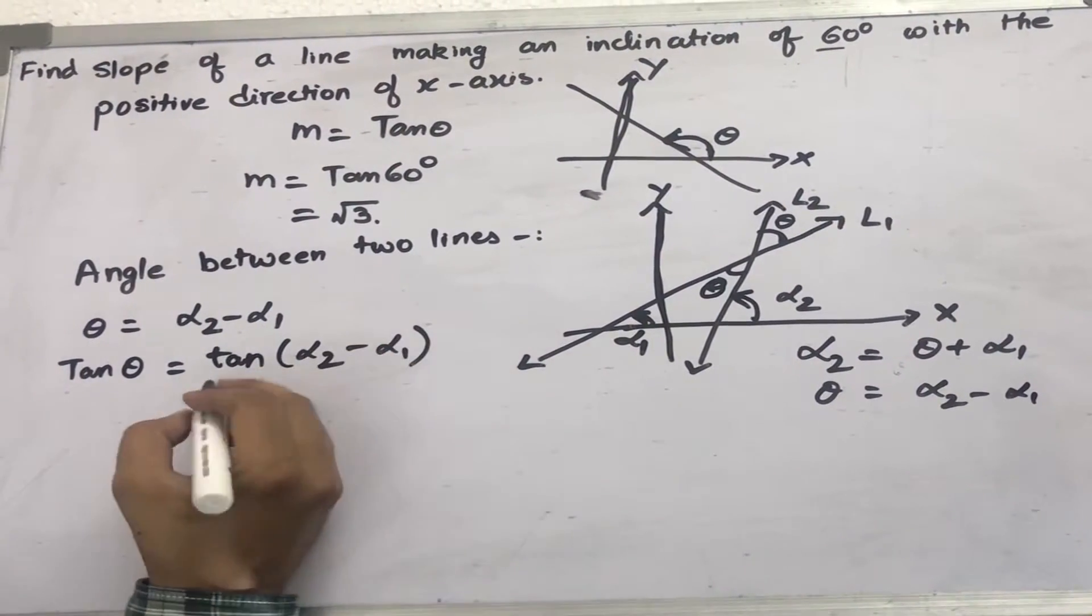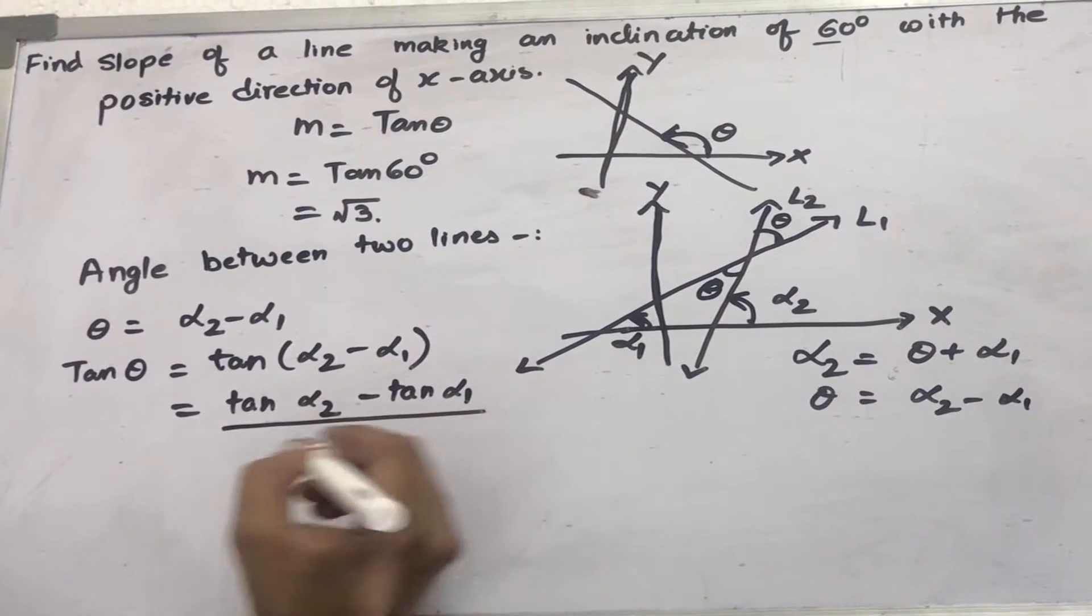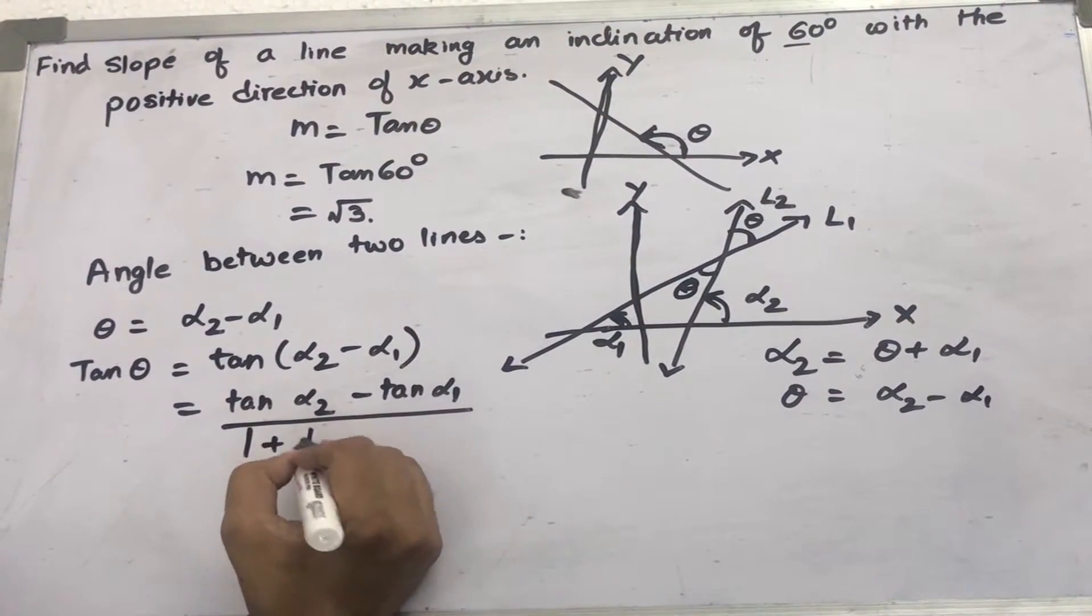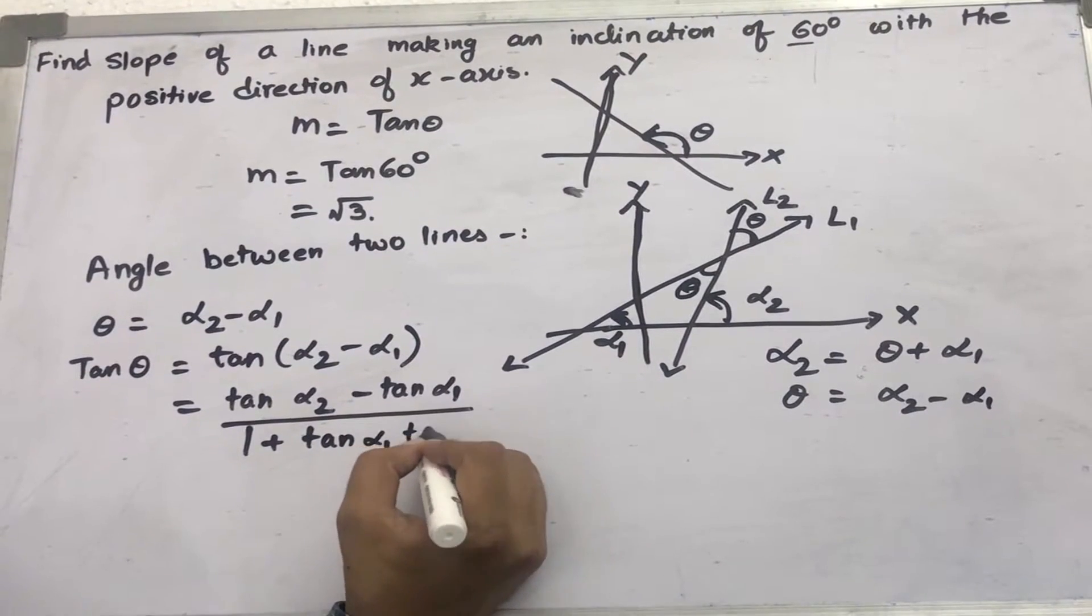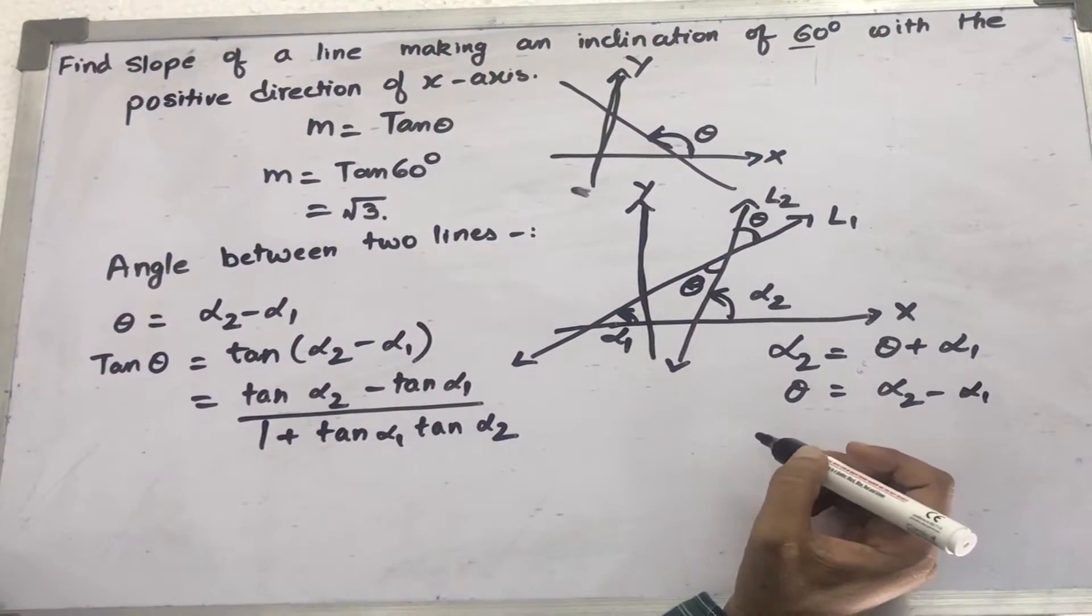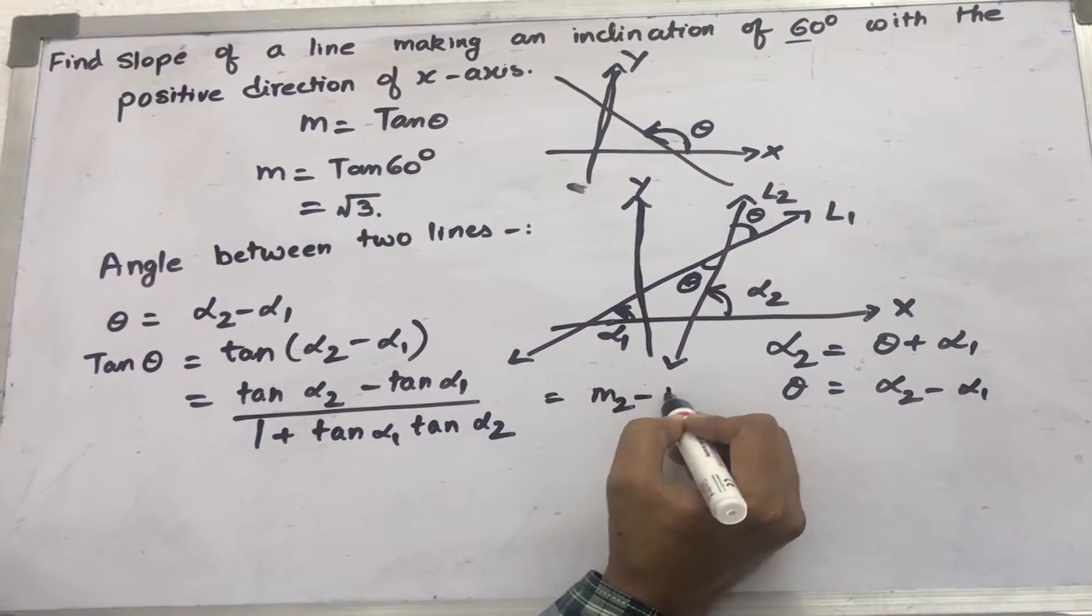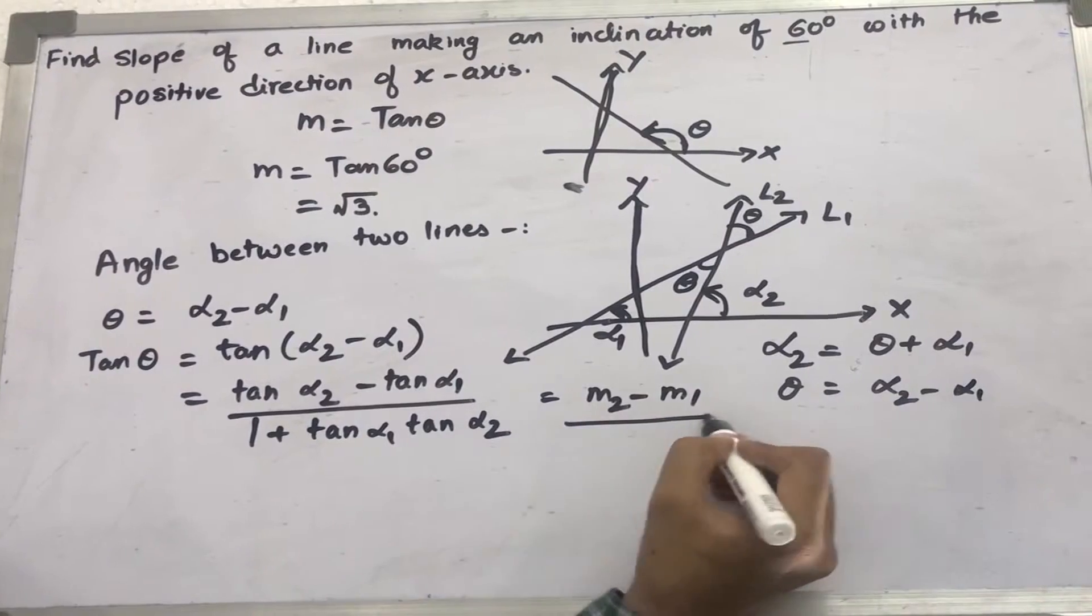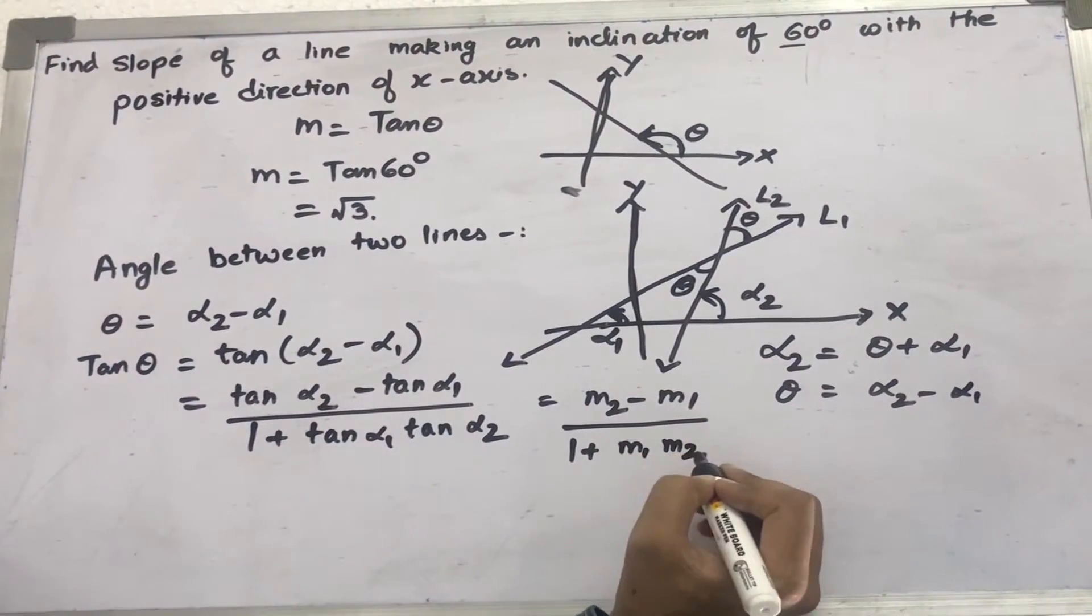Tan of a minus b is tan a minus tan b divided by 1 plus tan a times tan b. So I can write this as m2 minus m1 divided by 1 plus m1 m2.